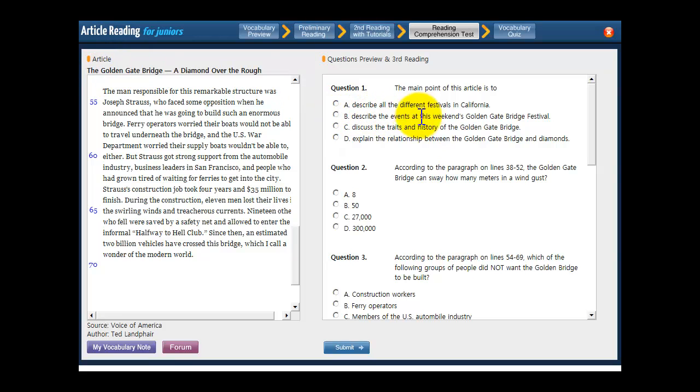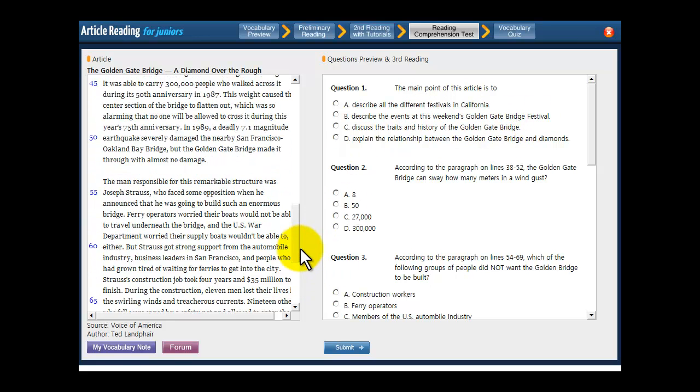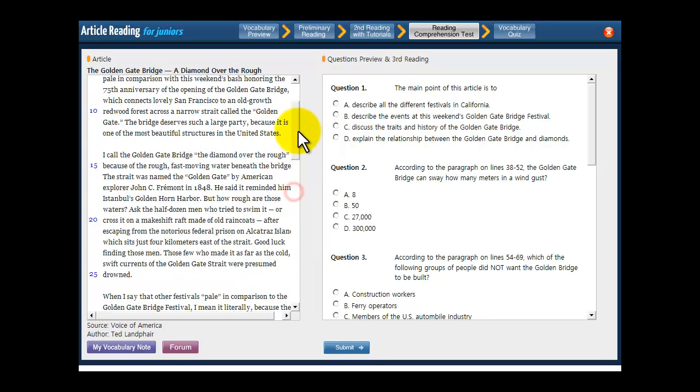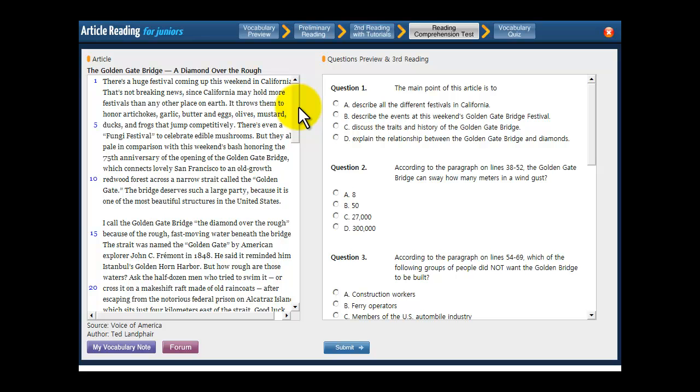So you're going to look for an answer choice that reflects that idea. Does it describe all the different festivals in California? No, it's about the Golden Gate Bridge. So your answer choice is going to mention the Golden Gate Bridge. A is wrong. There is a festival in here, but it's a festival for what? The Golden Gate Bridge, which is the main idea. What about B? Describe the events at this weekend's Golden Gate Bridge Festival. Now that's getting closer to the right answer, but the whole article doesn't tell us about what's happening at some festival. It's telling us about the bridge. The festival is mentioned as an indication of how important the bridge is in Californian history and in American history.